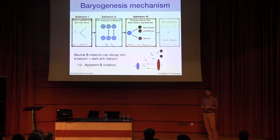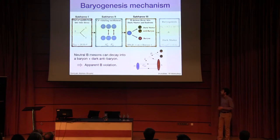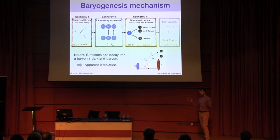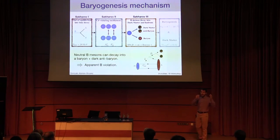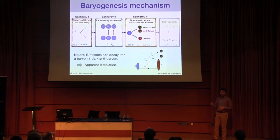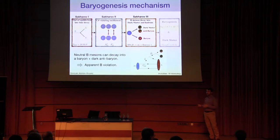After generating CP violation through B meson oscillations, we have to lock it in to a baryon number. This is achieved when the B mesons decay into a baryon plus a dark anti-baryon. This means the baryon number is not really globally violated, but rather the visible baryon asymmetry is compensated by an equal and opposite one in the dark sector. There's an overall apparent deviation in the visible sector, and that's how the third Sakharov condition is effectively circumvented.